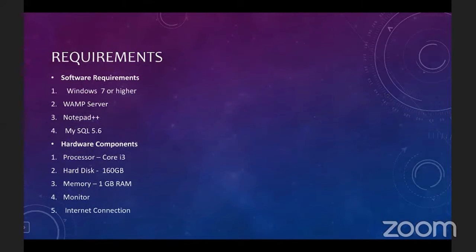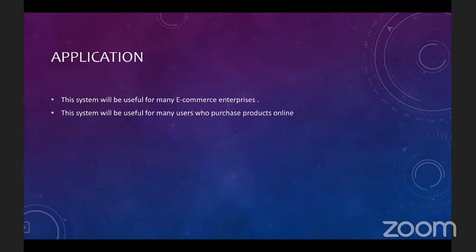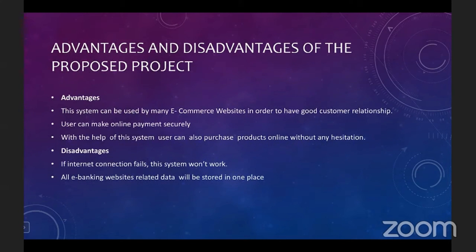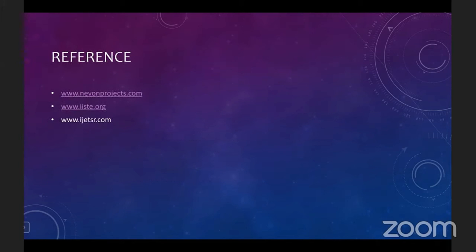The software requirements are Windows 7 or higher, a WAMP server, Notepad, and MySQL 5.6. The hardware requirements are a Core i3 processor, 160 GB hard disk, 1 GB RAM, a monitor, and a stable internet connection. The application is useful for e-commerce enterprises and people who prefer online shopping. Advantages include enabling e-commerce websites to maintain good customer relationships, allowing users to make online payments securely and purchase products without hesitation. Disadvantages are that if the internet connection fails the system won't work, and all e-banking website related data is not stored in one place. References are from nevonprojects.com, iista.org, and ijetsr.com. Thank you.